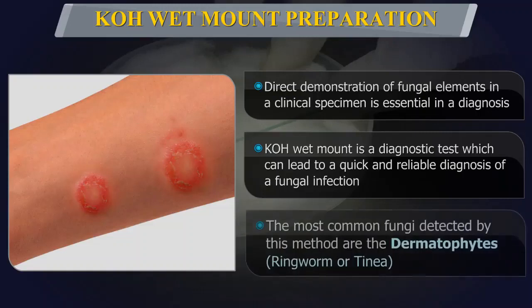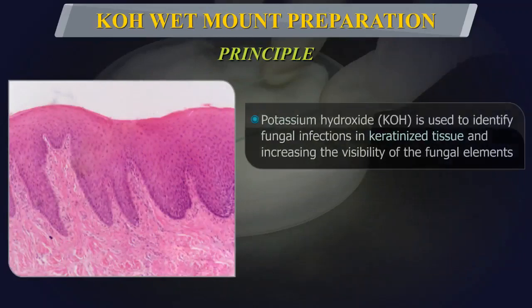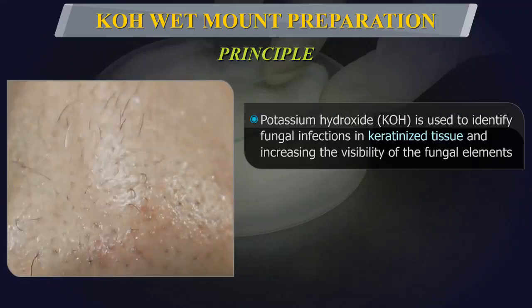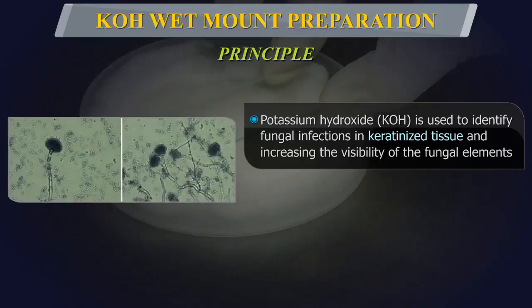The most common fungi detected by this method are the dermatophytes, more commonly known as ringworm or tinea. These fungi usually cause superficial infections of the skin, hair, and nails. Potassium hydroxide is used to identify fungal infections in keratinized tissue like skin, hair, and nails, and it acts by digesting the keratin, thereby increasing the visibility of fungal elements.